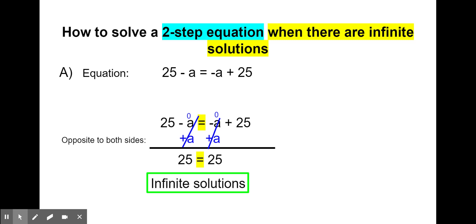If we were to plug in any value for a — say we took 2 — then we'd have 25 minus 2, which gives us 23 on the left, and on the right we'd have negative 2 plus 25, which also gives us 23. So we'd have 23 equals 23, which is true. If we try a equals 3, we'd have 25 minus 3, which gives us 22, and on the right negative 3 plus 25, which also gives us 22. So we have 22 equals 22 — true again. We could go on and on, but we just say we have infinite solutions because the left equals the right: 25 equals 25.